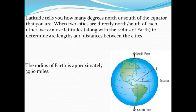We can use our understanding of arc length to find the distance between two cities on the surface of the earth. We're going to use the latitudes — that is, the degrees above or below the equator those two cities are — and the radius of the earth to approximate this distance.